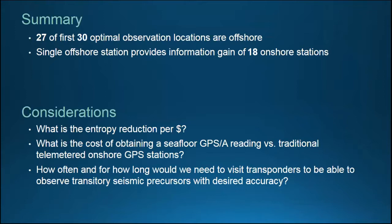To wrap up: 27 of the first optimal observations are offshore, and one single offshore station gives as much information as 18 onshore stations. We didn't go the extra step of asking which makes more dollars and cents, because that depends on how you run the offshore instrument and how often it needs to be visited. The answer for where to put stations also depends on the quantity you want to observe. But this framework lets us say: if you tell us what you want to observe and how often, we can tell you where to make observations to learn as much as possible.